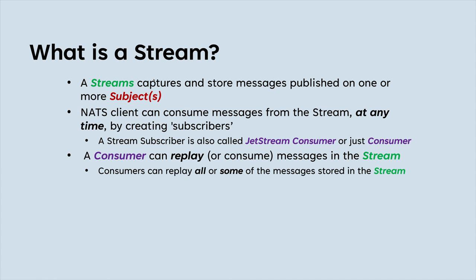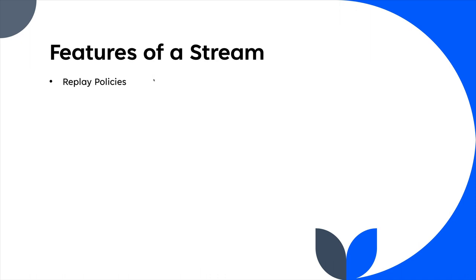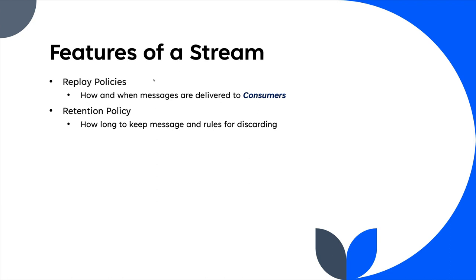Any client can choose to pick up messages from wherever they want to start from. Some of the features of a stream include replay policies — referring to how and when consumers get messages — and retention policies, which refer to how long NATS should keep messages before discarding them. There are different policies: limit the age of a message, limit the number of messages, or limit the stream to a certain size — for example, only storing 10 GB worth of data.